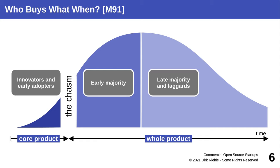Then comes what's called the chasm, because you need to go from core product to basic product and whole product. The next, much larger group of potential customers — called the early majority — look at your product differently. They are not buying the innovation so much as they are buying business value in the larger scheme of things at their company. They are still innovative, but they are not willing to try untested bare-bones software; they expect at least the resemblance of a whole product. Afterwards there's the late majority and laggards, who already have a long checklist of things your product must do before they consider buying.